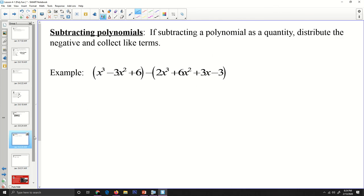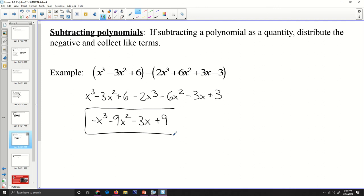When you are subtracting polynomials, if you're subtracting a polynomial as a quantity, you have to distribute the negative first and then collect like terms. So if there's a subtraction, we have one more step. We're going to write the first equation and we're going to leave it alone. But for this one, we are subtracting the entire quantity, so we have to distribute the negative to each term. So I'll have -2x^3 - 6x^2 - 3x and then minus a negative will make that +3 on the end. And so I'm just collecting like terms like I did in the last time. I have x^3 and -2x^3 is going to leave me -x^3. -3x^2 - 6x^2 will be -9x^2. And then I again don't have a linear term, so -3x and then 6 + 3 will be 9, so that is that particular expression.